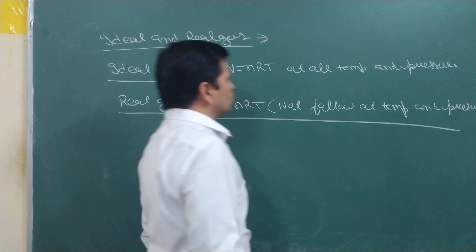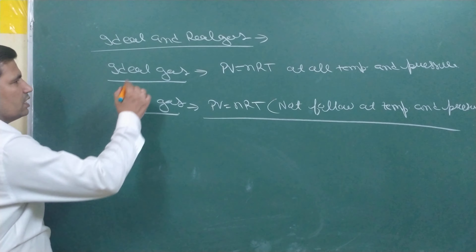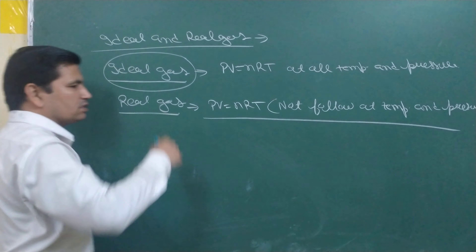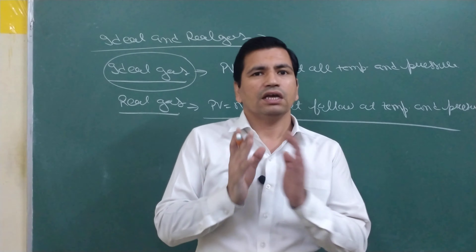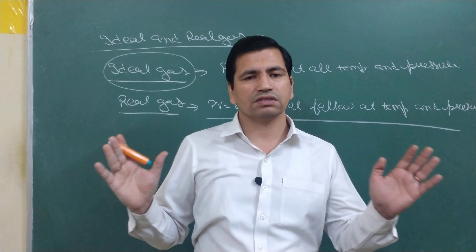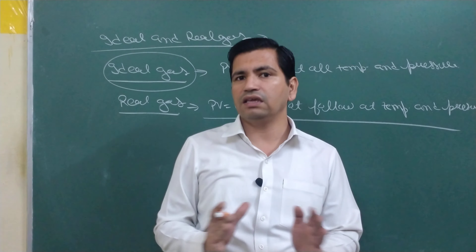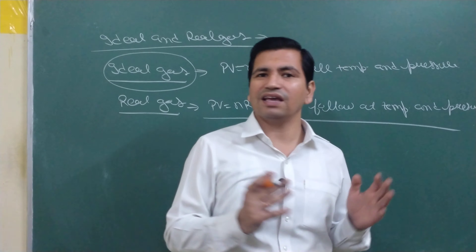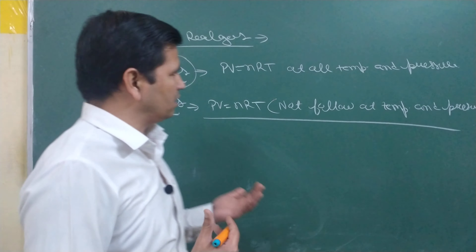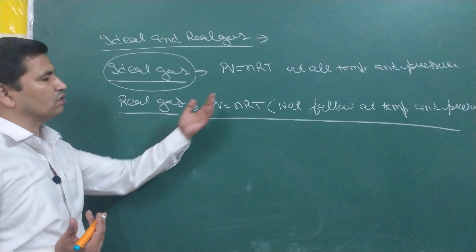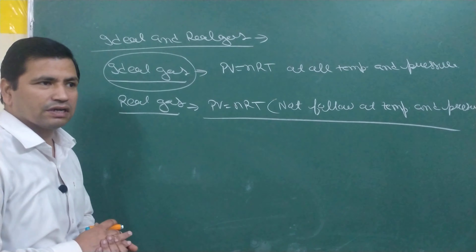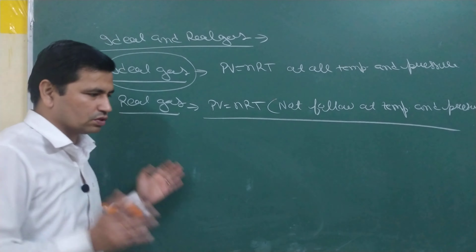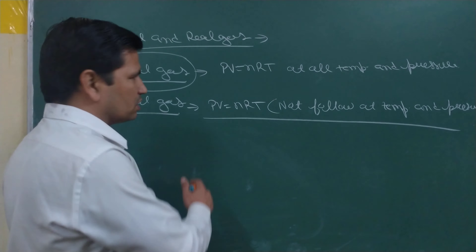So first of all, a very interesting thing is that no gas is actually ideal — just like no person is ideal. No gas is 100% ideal. Every gas is real. So then we have only studied PV = nRT so far, and if gas doesn't follow it, how do we handle that? We will discuss that now.